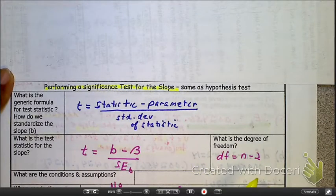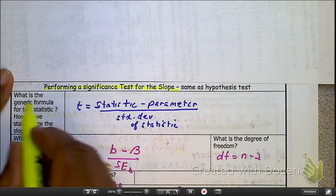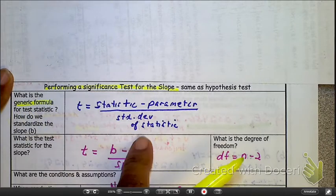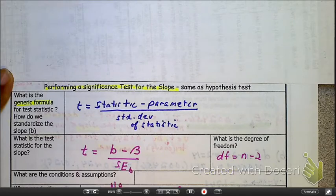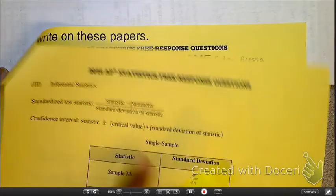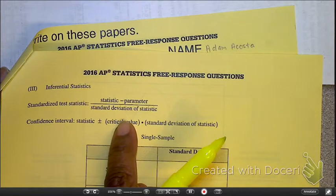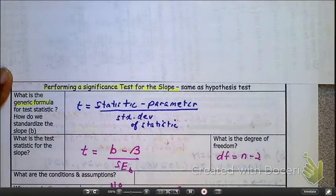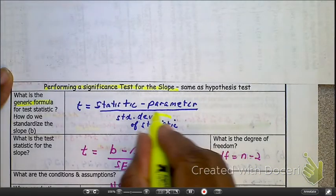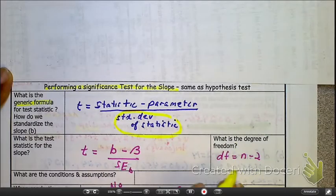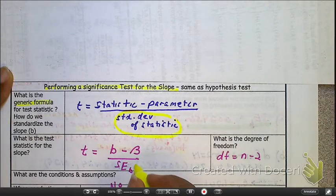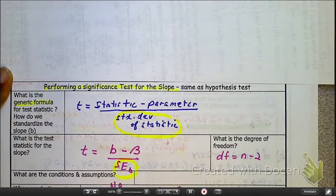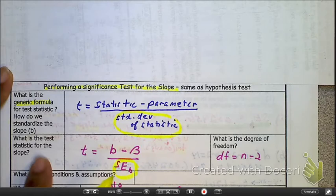You're looking right here at the equation. When they say, what is the generic formula? Do I keep seeing this thing déjà vu? Yes, here, test statistic minus the parameter divided by the standard deviation of the statistic. Let's put this equation here, the specific one, in perspective.